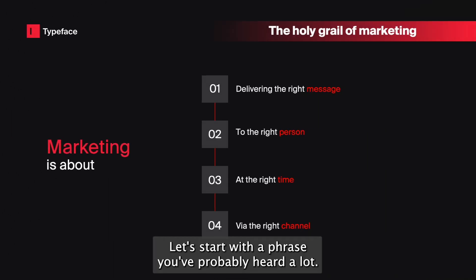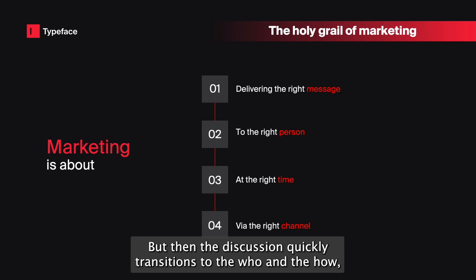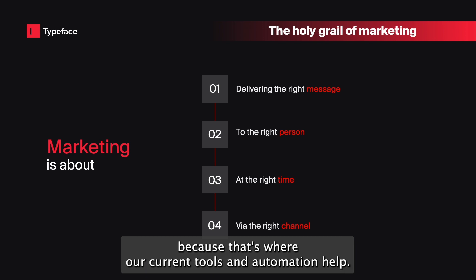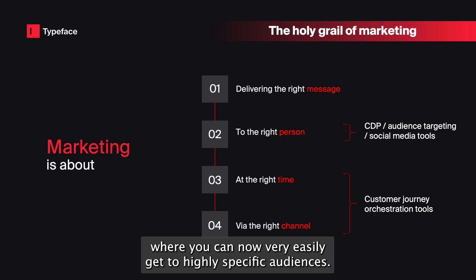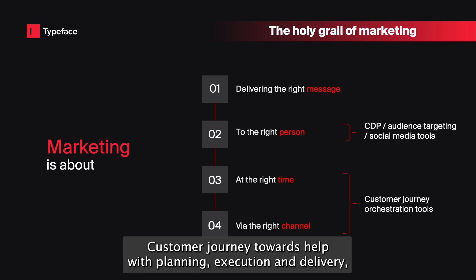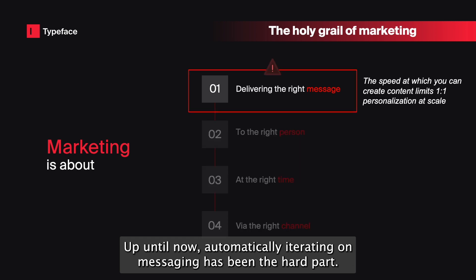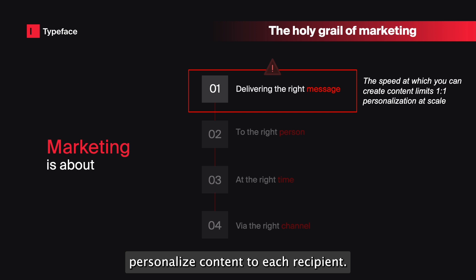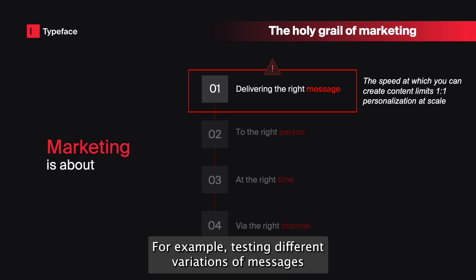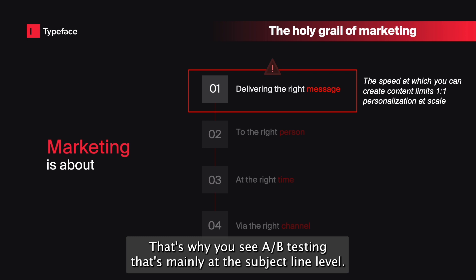Let's start with a phrase you've probably heard a lot. Every time it comes up in discussion, it seems very insightful, but then the discussion quickly transitions to the who and the how, because that's where current tools and automation help. Over the last decade, data systems have gone through a transformation where you can now very easily get to highly specific audiences. Customer journey tools help with planning, execution, and delivery, and CDPs and social media companies help take care of targeting and ranking. Up until now, automatically iterating on messaging has been the hard part. The speed at which you can iterate on content limits how much you can personalize content to each recipient. For example, testing different variations of messages is limited by the speed at which you can generate content. That's why you see A/B testing that's mainly at the subject line level.